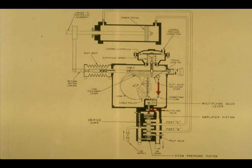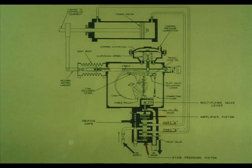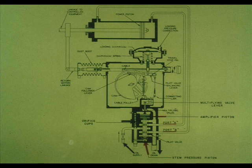If the multiplying valve lowers, it covers the nozzle, and the pressure builds up against the amplifier piston. The amplifier piston lowers. If the multiplying valve stem raises, the pressure bleeds to the drain. The amplifier piston raises because oil supply pressure is pushing the stem pressure piston up at all times.